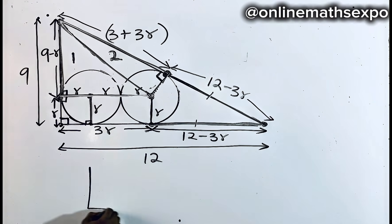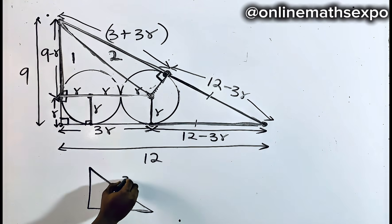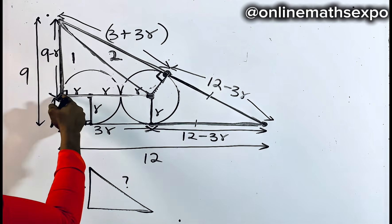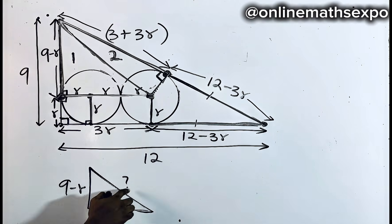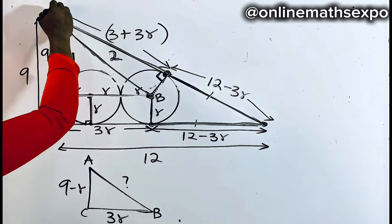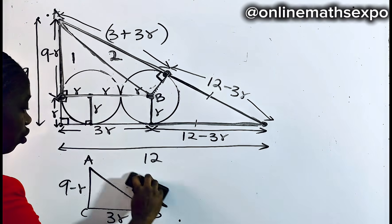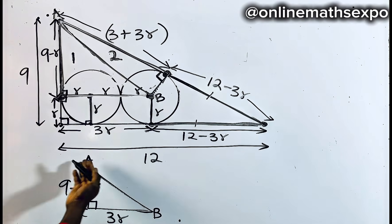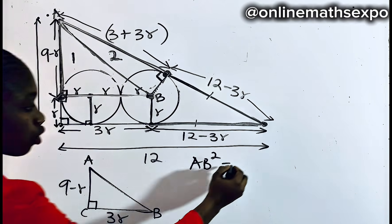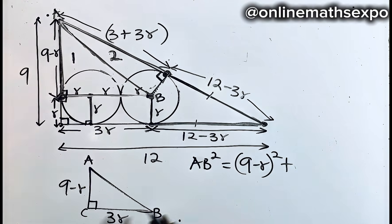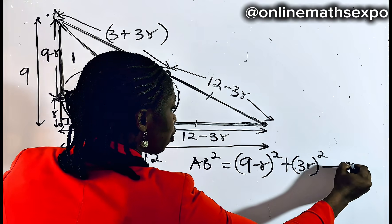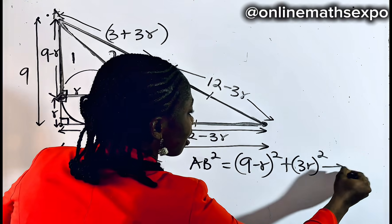Bringing out shape one: the two legs are (9 minus R) and (3R), and AB is the hypotenuse we want. Labeling the vertices A, B, C and applying the Pythagorean theorem: AB squared equals (9 minus R) squared plus (3R) squared. Let's call this equation one.